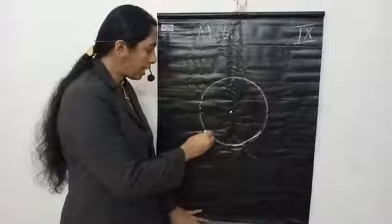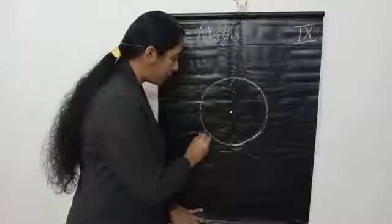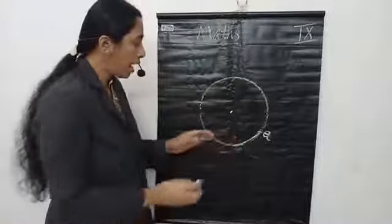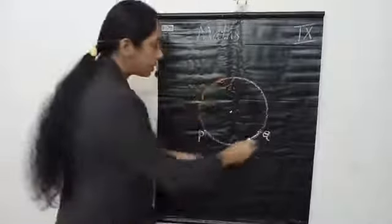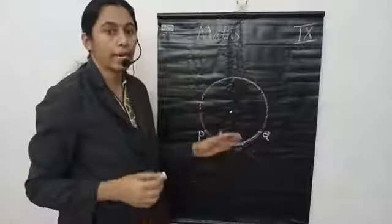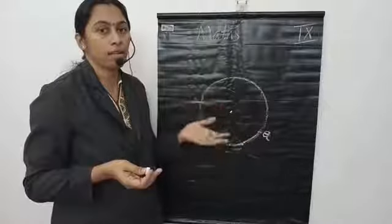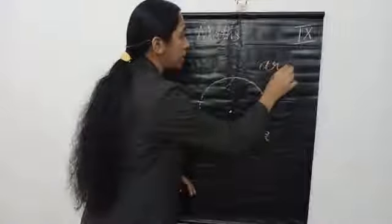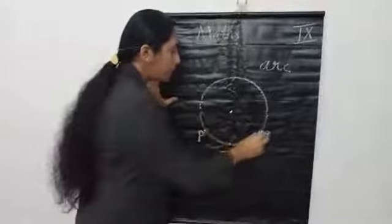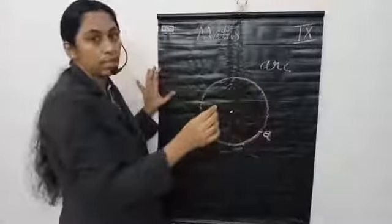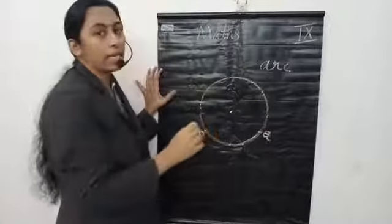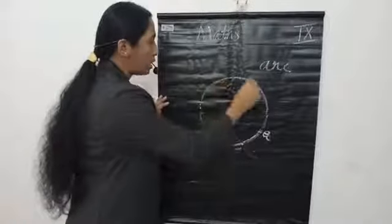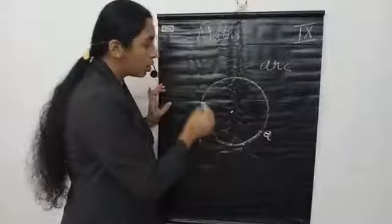Now, if we take two points on the circle — for example, point P and point Q — these points are on the circle and the circle is divided into two parts. This part is the arc of the circle. You already learned this in earlier classes. The part of the circle is known as the arc of the circle. This arc has a shorter distance and this arc has a longer distance. The longer arc is known as the major arc and the shorter arc is known as the minor arc.